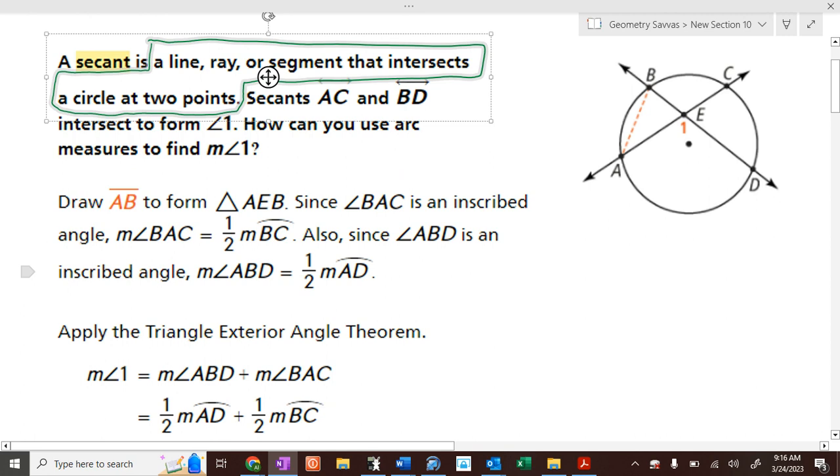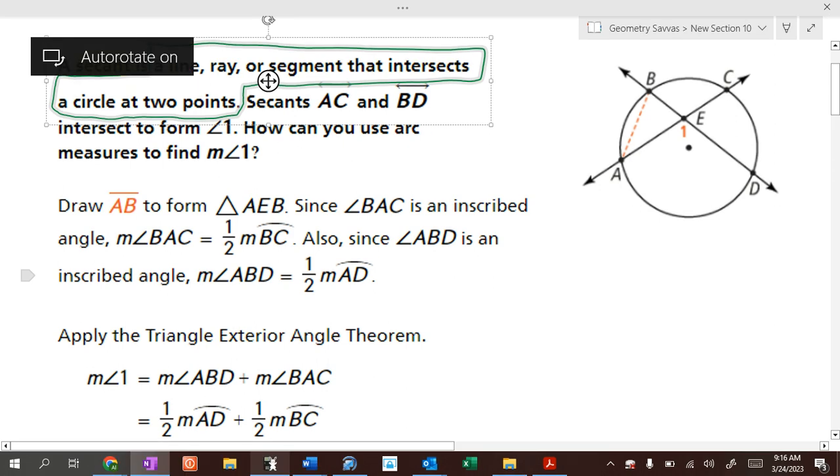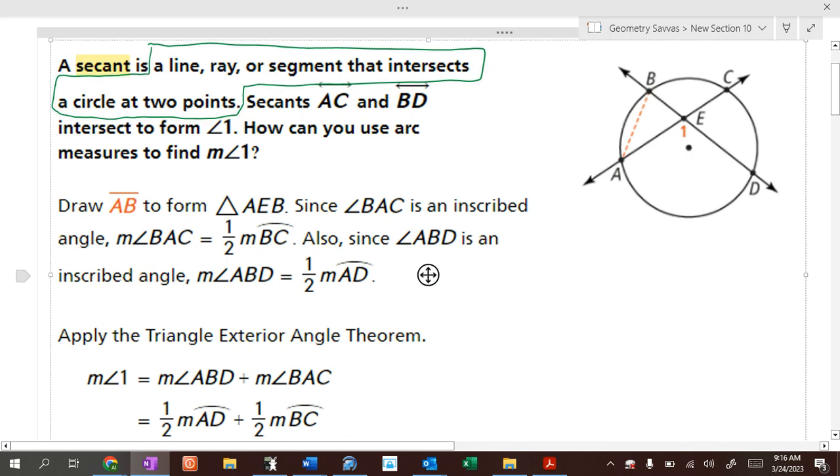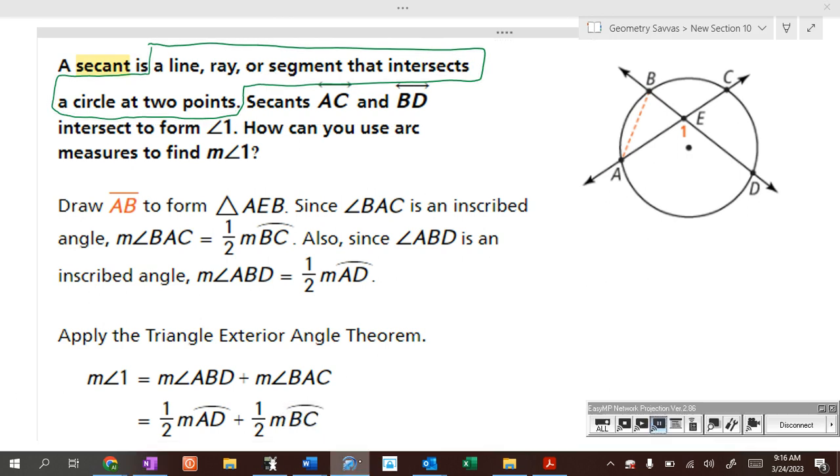Alright, so here we go. A secant is a ray or line or segment that intersects a circle at two points. So these are both secants of the circle.